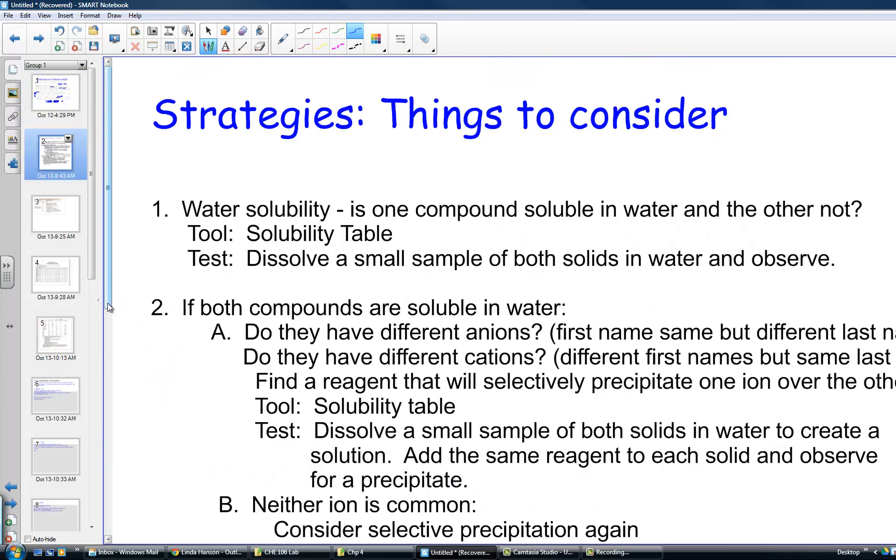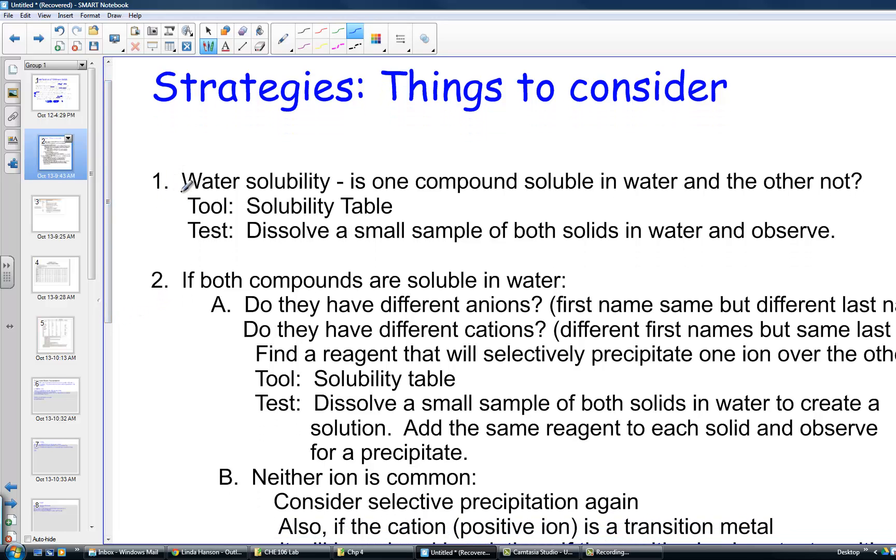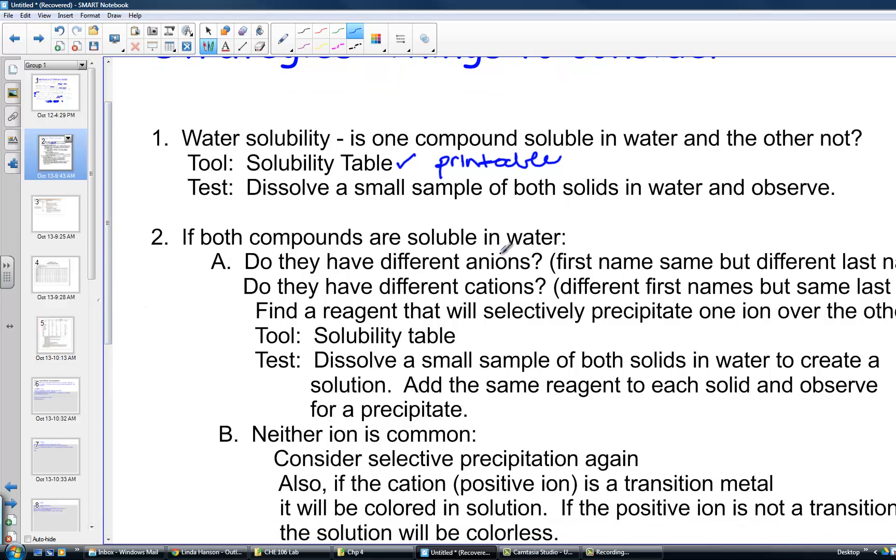Some strategies to consider when trying to identify unknown salts. Number one: water solubility. Is one compound soluble in water and the other not? That solubility table we were provided in our test taking tool packet is available. I've also put additional solubility tables in this link as well. If one isn't soluble and one is, it's very easy to decide. Take a little bit of your unknown salt, dissolve it in water and see if it goes or not. What happens if both of the compounds are soluble in water?